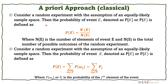Under the a priori approach, consider a random experiment with equally likely sample space. The probability of an event E, denoted as P[E] or P(E), is defined as the number of elements of event E over the total number of possible outcomes of the random experiment — that is, the total number of your sample space. That's how we compute probability under the a priori approach.